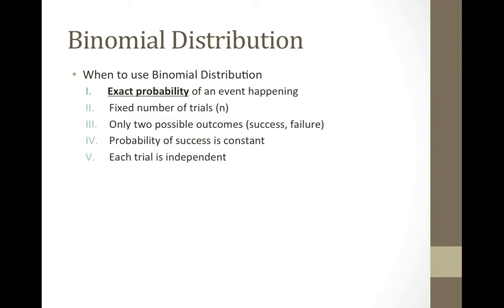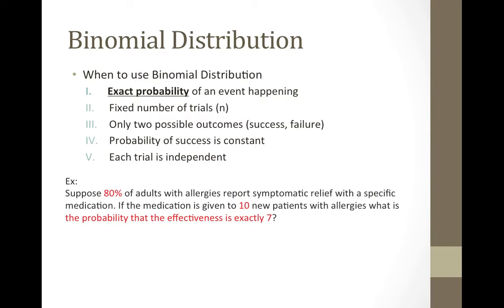Now that we know how binomial distribution works, it is time to discuss when binomial is applicable to a given problem. When there is an exact probability of an event happening, for example: suppose 80% of adults with allergies report symptomatic relief with a specific medication. If the medication is given to 10 new patients with allergies, what is the probability that the effectiveness is exactly seven? The exact probability of this problem is 0.8 or 80%. Next, there needs to be a fixed number of trials. For this example, the 10 new patients stand for the fixed number of trials. Binomial also has only two possible outcomes: the probability that seven patients find relief with the medications, and the probability that seven patients do not find relief.